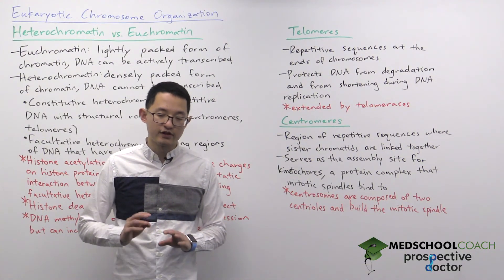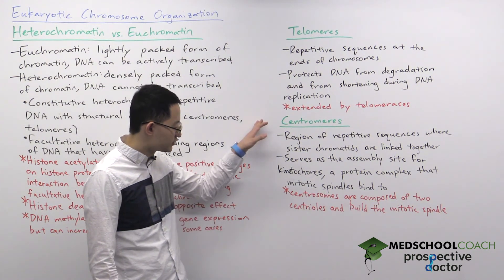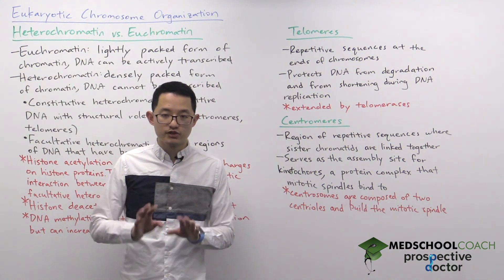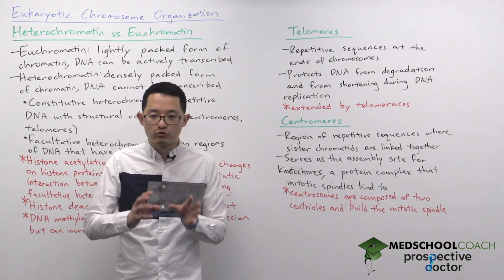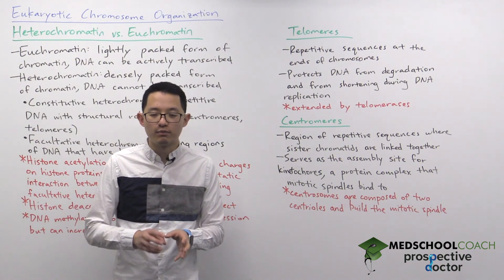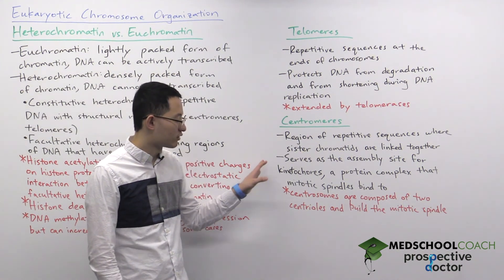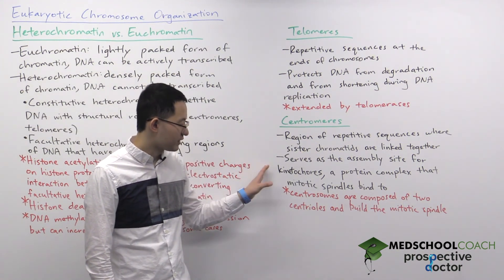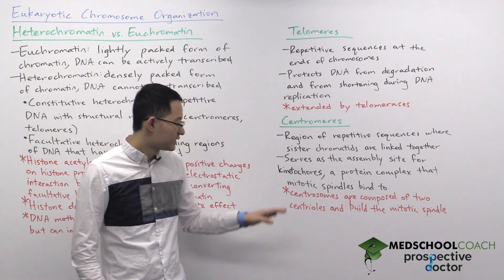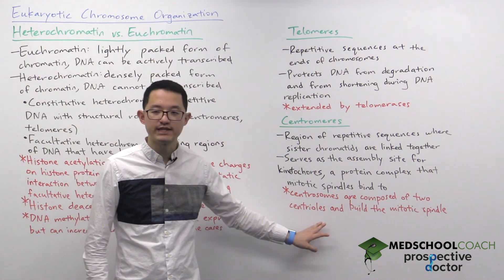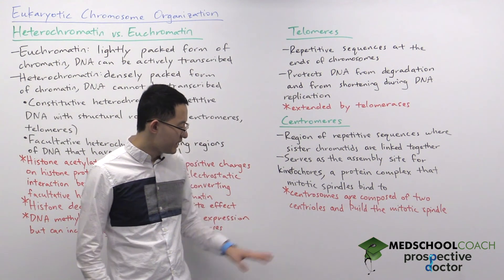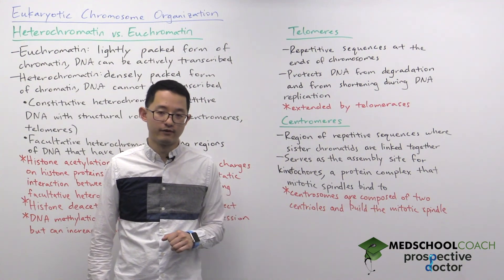There are a few terms students often confuse: centromeres, kinetochores, centrosomes, and centrioles. To clarify — centromeres are regions on DNA where sister chromatids bind and the kinetochore protein complex can form. The kinetochore protein complex is what mitotic spindles bind to. Centrosomes are organelles composed of two centrioles that build the mitotic spindle. Make sure to review these terms so you don't confuse them on the MCAT.